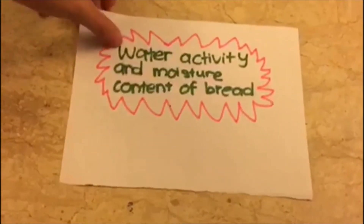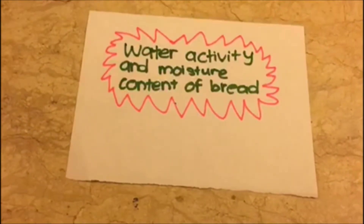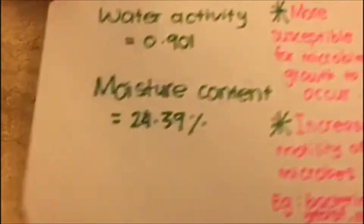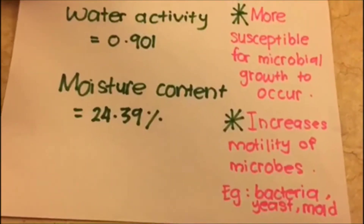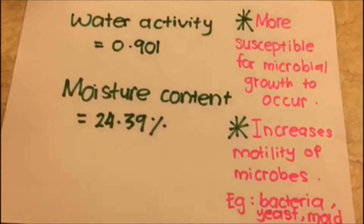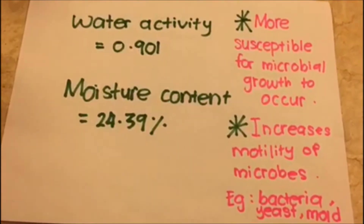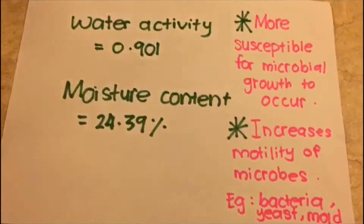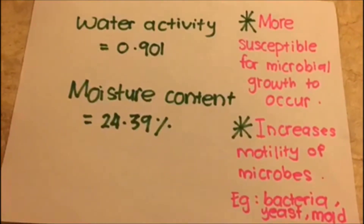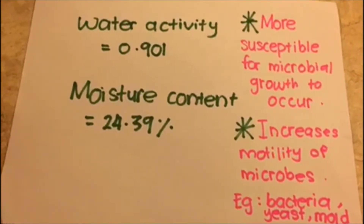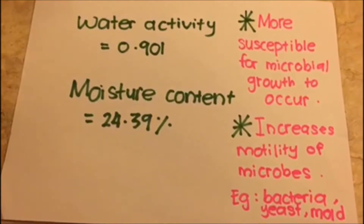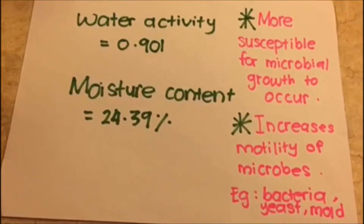Now let's talk about the water activity and moisture content found in bread. The water activity of bread is 0.91, which is a high water activity that allows more microbial growth to occur. The moisture content is also high, which increases the motility of the microbes.